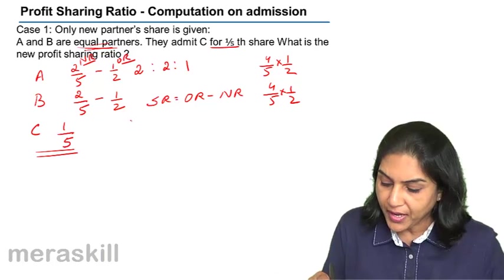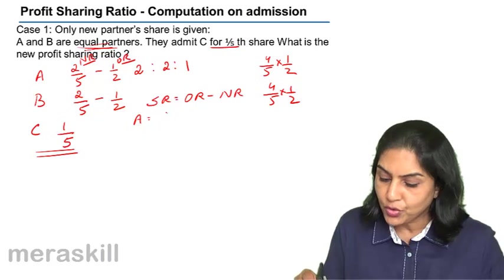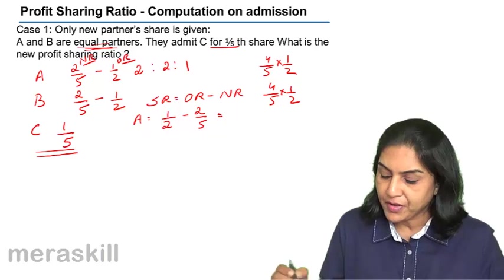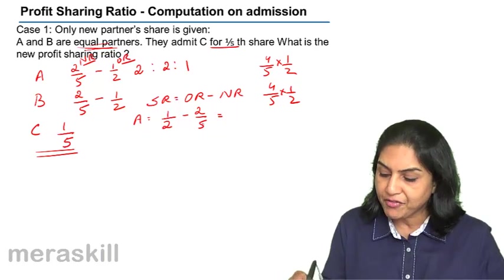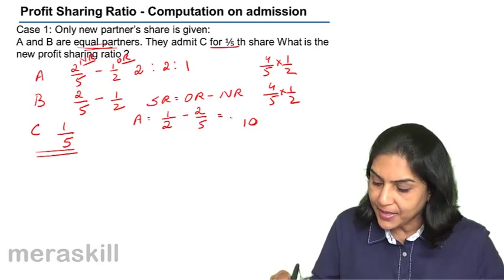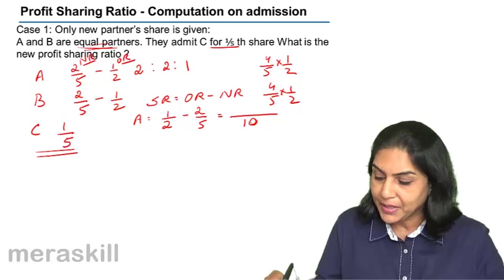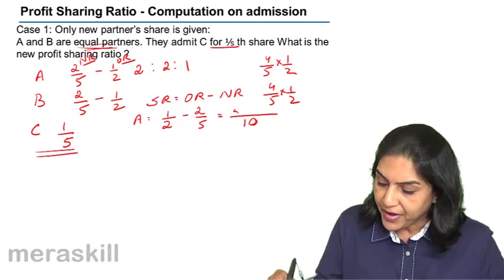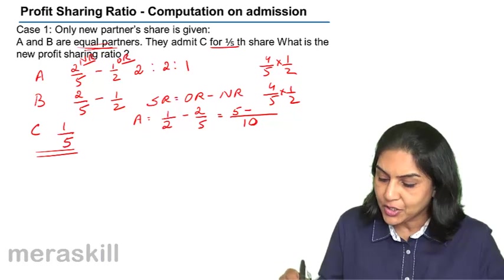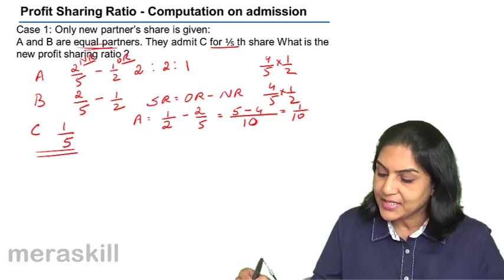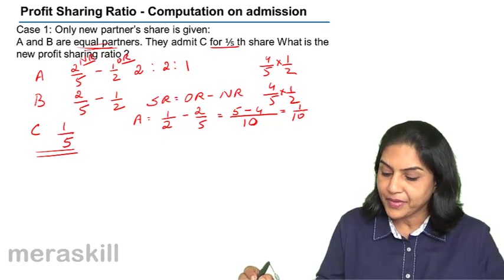In case of A, the old ratio is 1 by 2 and the new ratio is 2 by 5. To deduct, we take the LCM of 2 and 5, which is 10. So it is 5 by 10 minus 4 by 10, giving us 1 by 10 as the sacrificing ratio for A.